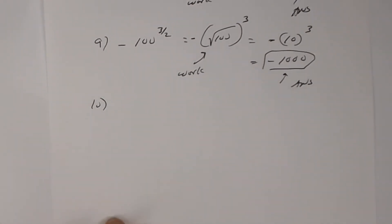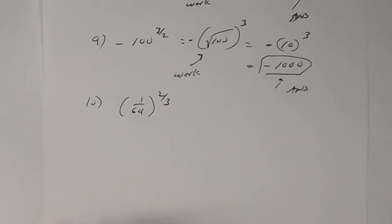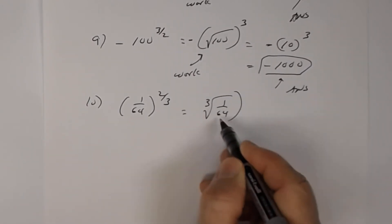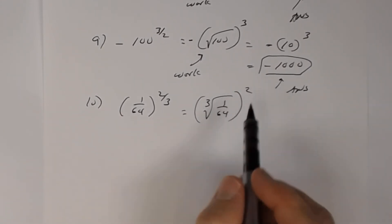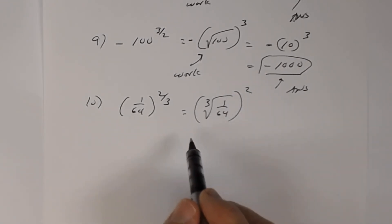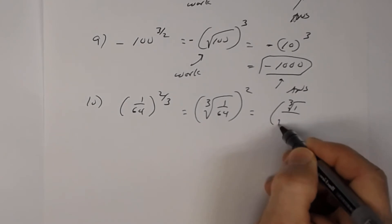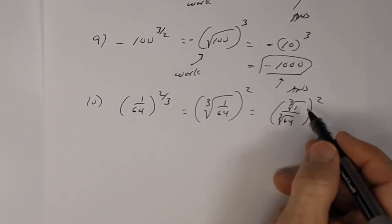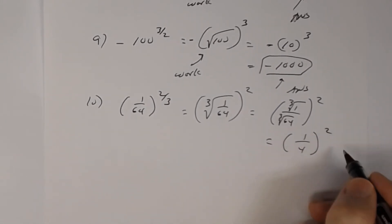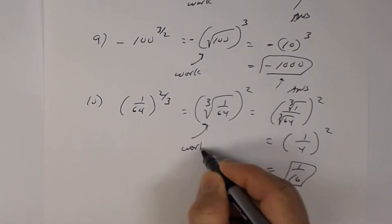Number 10: 1 divided by 64, raised to the 2/3. Your denominator is your index, so this becomes the cube root of 1/64, all raised to the 2nd power. The cube root of 1 is 1 and the cube root of 64 is 4, so this is (1/4) squared, which equals 1/16.